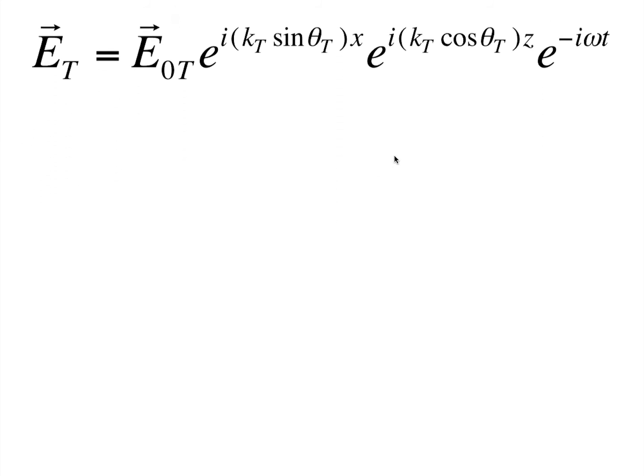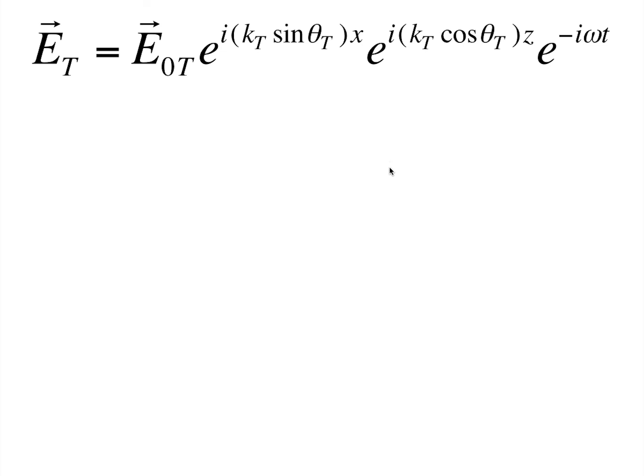Now, let's look at this expression under the condition for total internal reflection, which we derived earlier as sin theta t is greater than 1. Now, if sin theta t is greater than 1, but it still remains a real number, so it does not affect this term in any way. Since this is a constant and this does not depend on composition, it does not affect these terms either. But what about this term?